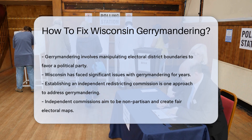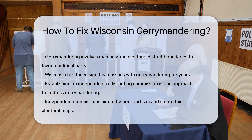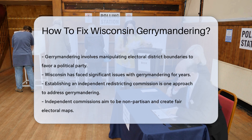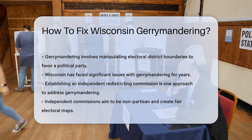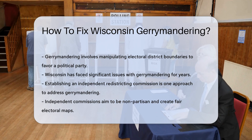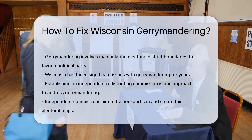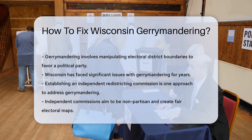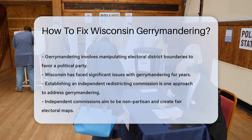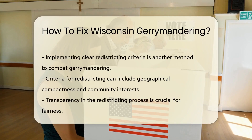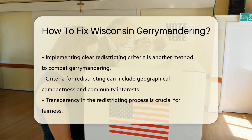Addressing gerrymandering involves several steps. One approach is to establish an independent redistricting commission. This commission would be responsible for drawing fair and balanced electoral maps. Independent commissions are designed to be nonpartisan and aim to reflect the true demographic and political landscape.